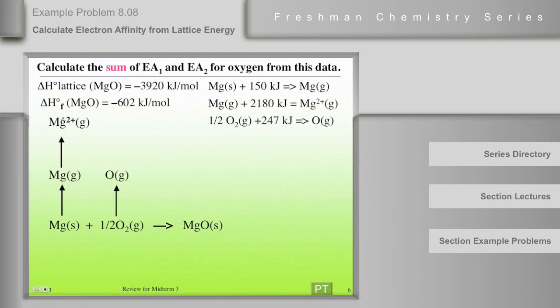The oxygen has to first be broken into oxygen atoms, and then from oxygen atoms to oxygen di-anion. This is EA1 plus 2 for oxygen atom. And this is what we're going to solve for.